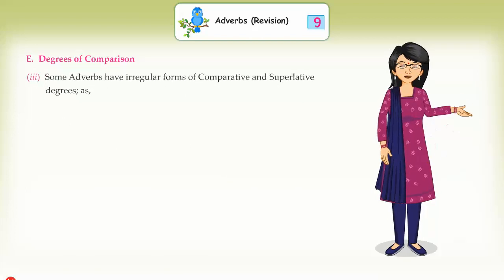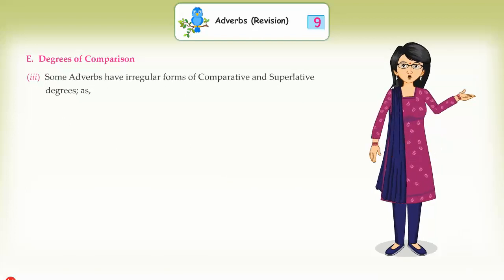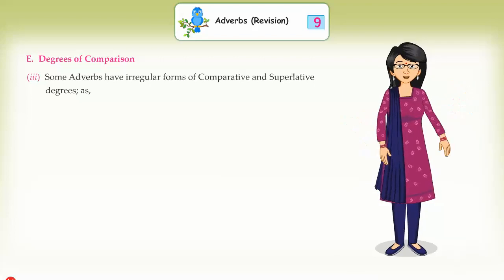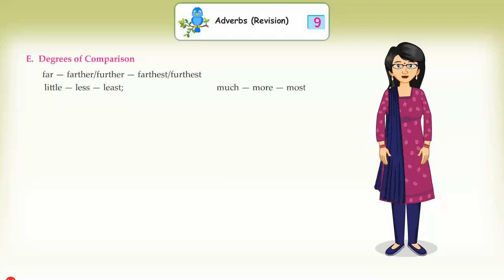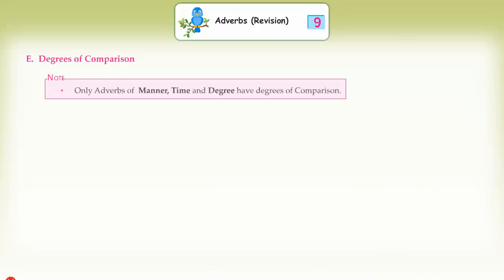(3) Some adverbs have irregular forms of comparative and superlative degrees. Examples: good → better → best, badly → worse → worst, far → farther/further → farthest/furthest, little → less → least, much → more → most. Note: Only adverbs of manner, time, and degree have degrees of comparison.